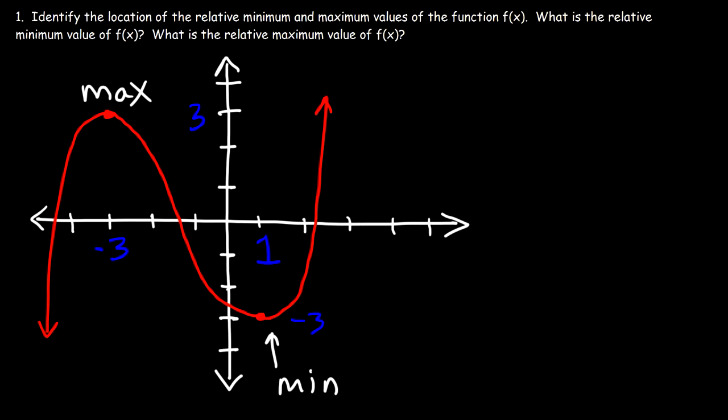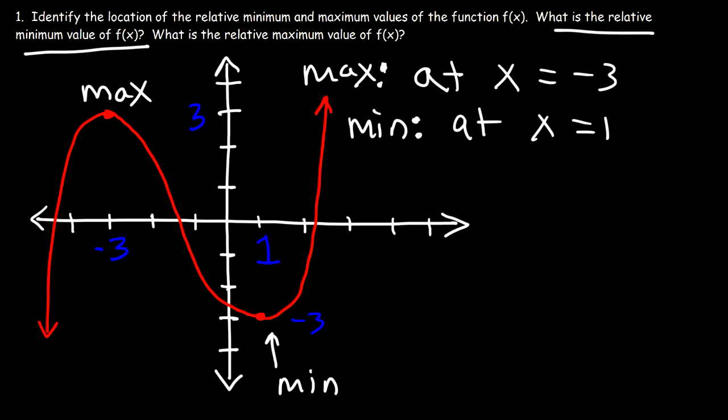So let's say if we were asked to find the location of the relative maximum, we could say that it's located at x equals negative 3. And the location of the relative minimum, we could say it's located at x equals 1. And then for this part, what is the relative minimum value of f of x?